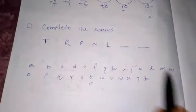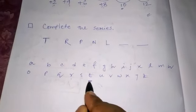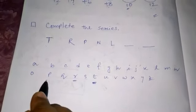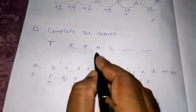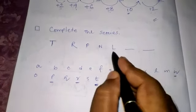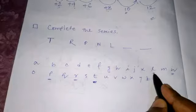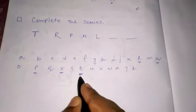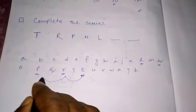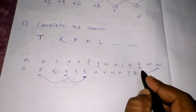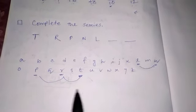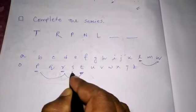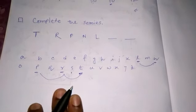T R P N L. There's T here, then R, then P, then L that is here. It is very clear that the series is T R P N L. In every sequence, one letter is omitted. So if you follow the series, then you will get...